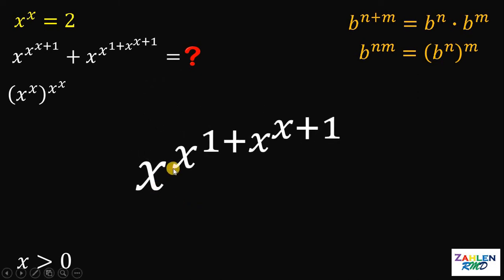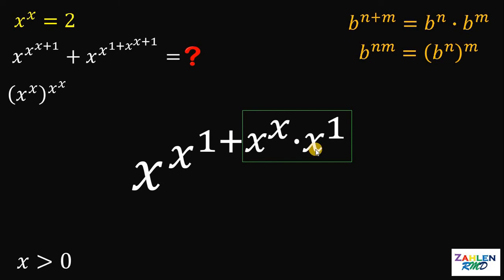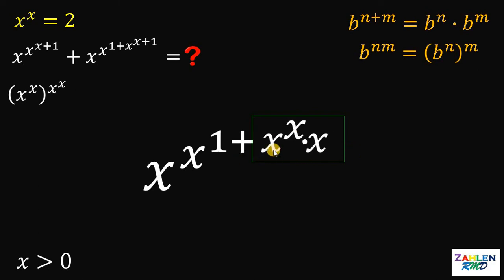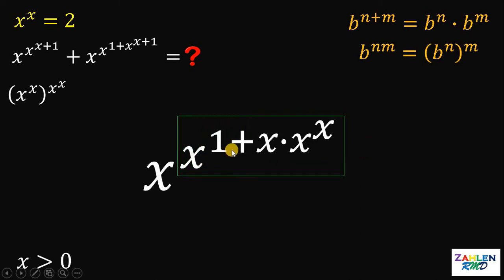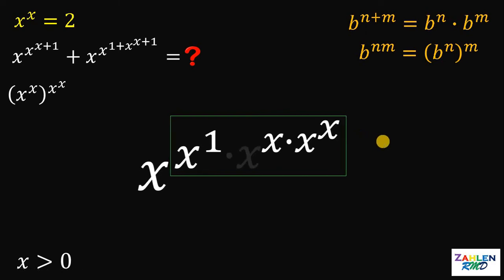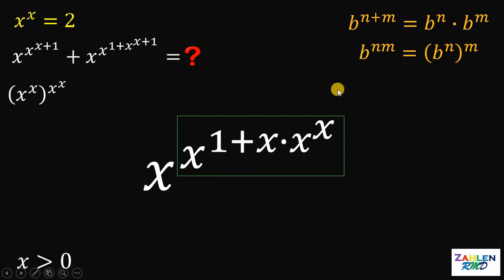We have x raised to x raised to 1 plus x raised to x plus 1. Let's take this term x raised to x plus 1 — using the first identity, this can be written as x raised to x times x to the 1, and x raised to 1 is just x. Let's rearrange some terms a little bit, then focus on the term x raised to 1 plus x times x raised to x. Again, using the first identity, this gives us x raised to 1 times x raised to x times x raised to x. Take note that we just used the first identity here, so don't be confused.